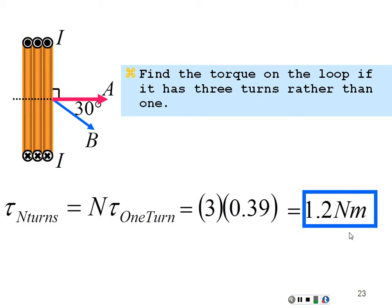So the total torque on a multi-loop coil is τ = N·I·A·B·sin θ — sometimes written as NIAB sin θ or rearranged as BAIN sin θ.